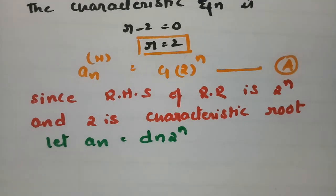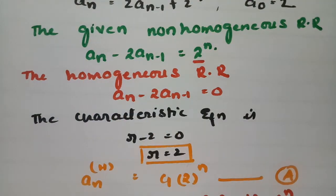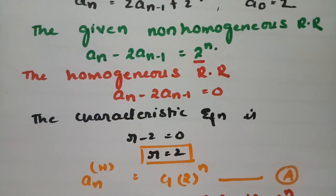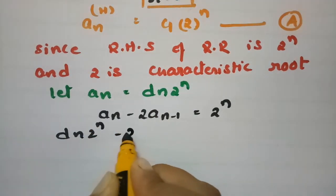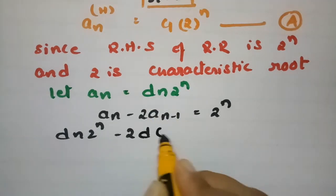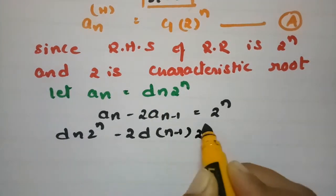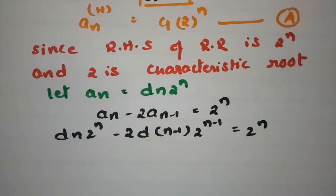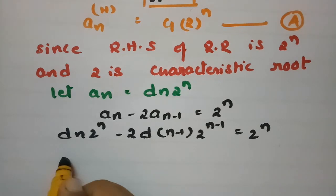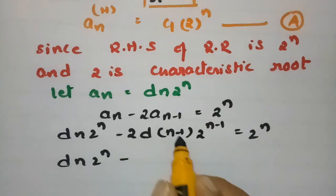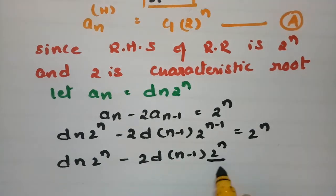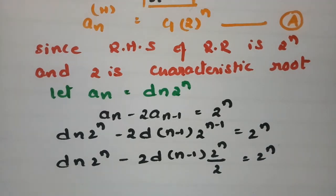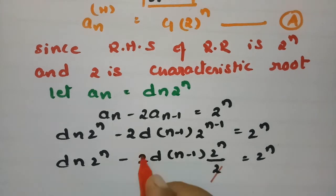Substituting into the equation aₙ − 2aₙ₋₁ = 2ⁿ: aₙ = d·n·2ⁿ and aₙ₋₁ = d·(n−1)·2ⁿ⁻¹. So we get d·n·2ⁿ − 2·d·(n−1)·2ⁿ⁻¹ = 2ⁿ, which simplifies to d·n·2ⁿ − d·(n−1)·2ⁿ = 2ⁿ.